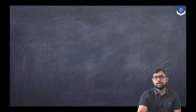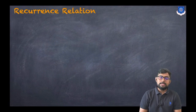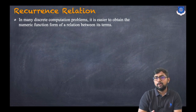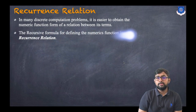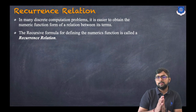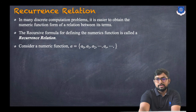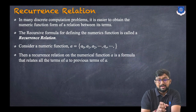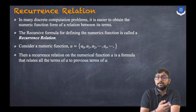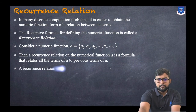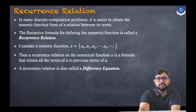First let us understand what is a recurrence relation. In many discrete computational problems, it is easier to obtain the numeric function from the relation between its terms. The recursive formula for defining the numeric function is called a recurrence relation. Consider a numeric function a = {a0, a1, ..., ar}. The recurrence relation on a numeric function relates all the terms of a to previous terms of a.